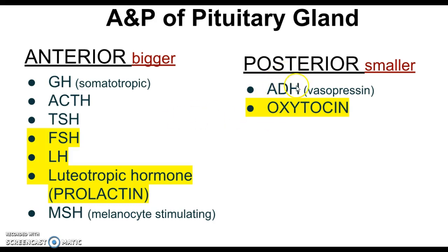We also have ADH — antidiuretic hormone. If we have too much ADH, we're not going to diurese; we retain fluid — that's SIADH, syndrome of inappropriate antidiuretic hormone. We bloat up, make little urine, and have super high blood pressure because fluid backs up. On the other side, if we're deficient in antidiuretic hormone, we have diabetes insipidus, where we make massive amounts of urine, causing dehydration, hypovolemia, blood pressure drop, tachycardia, and potentially hypovolemic shock if not corrected.